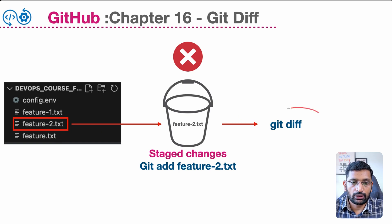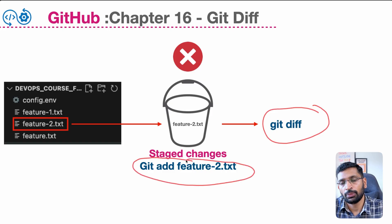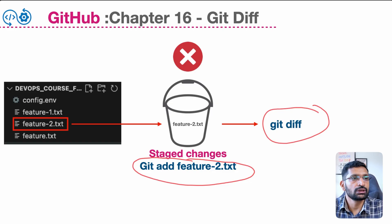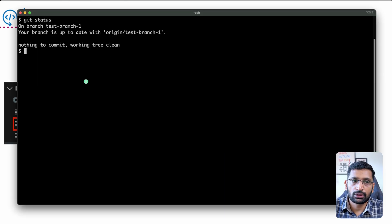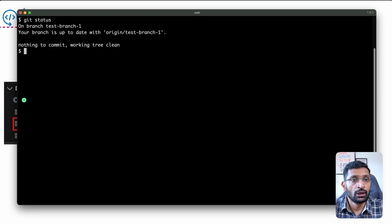Let's start with the normal git diff command, but first let's understand the concept behind it. To run a normal git diff command, you need to make sure your changes are unstaged — meaning you have not run the git add command on any of your files. I'll run git status first, and you can see there is no difference because there are no local changes made so far. My local git repository is exactly in sync with my remote repository.